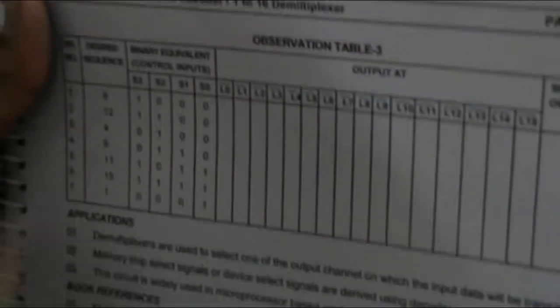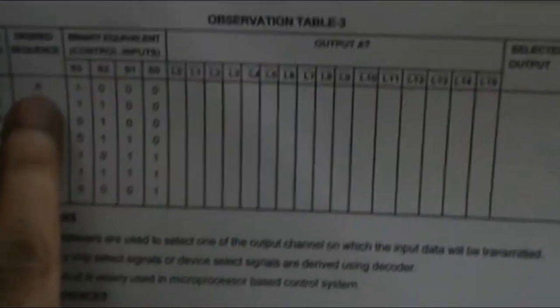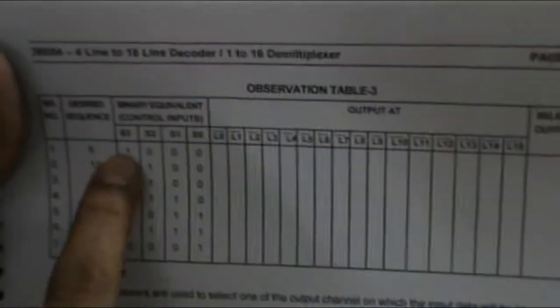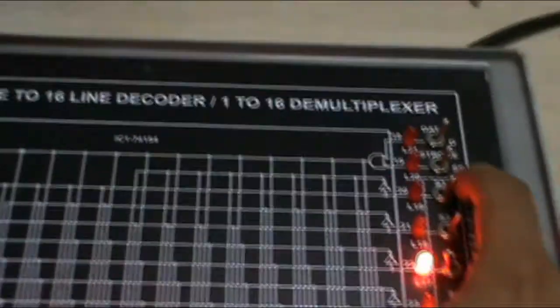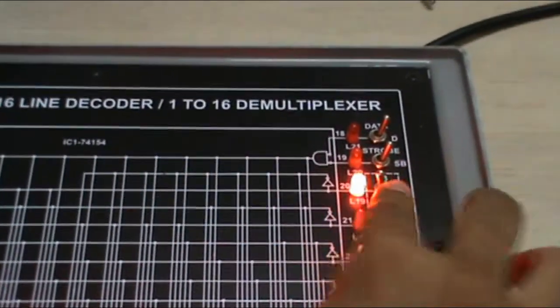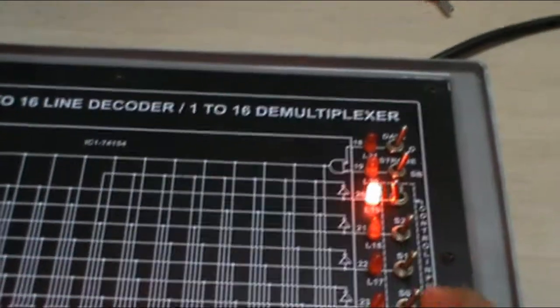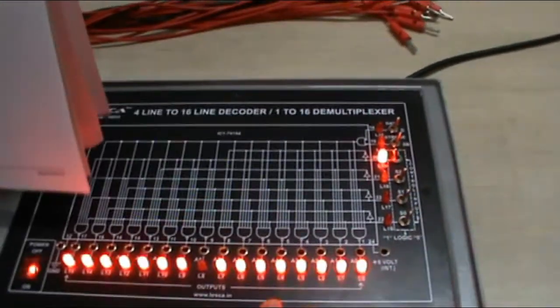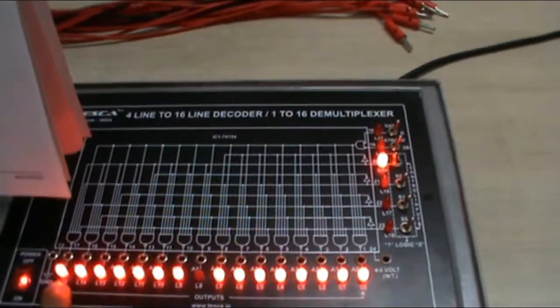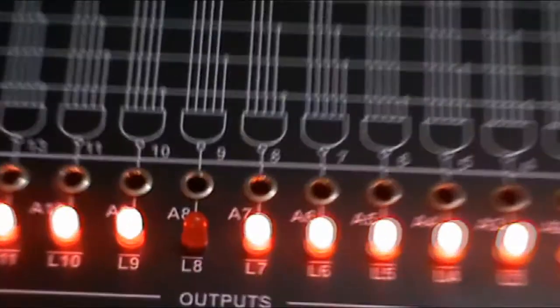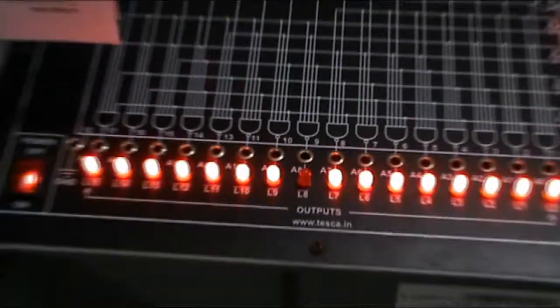First of all I take 8 and convert into binary which is 1,0,0,0 and give this as the input. This is my input 8, and the output is shown according to the LEDs L0 to L15. In this my L8 is off.